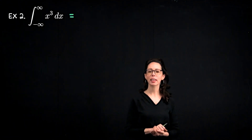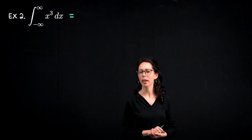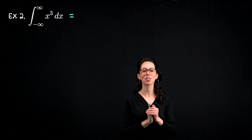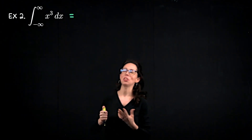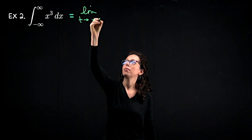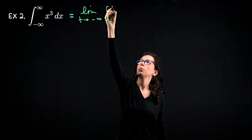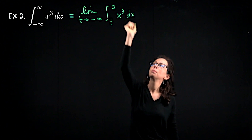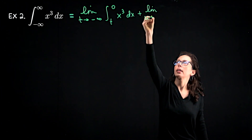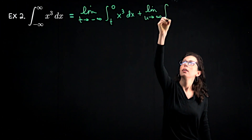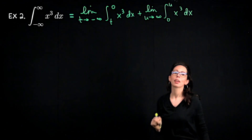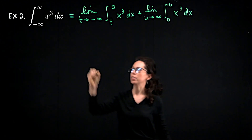Now let's look at another example. We would like to integrate y equals x cubed from negative infinity to infinity. We must break this computation up at some point on the x-axis, and as usual I'm going to pick x equals zero. So this is the limit as t goes to negative infinity of the definite integral from t to zero of x cubed dx, and then we add to that the limit as u goes to infinity of the integral from zero to u of x cubed dx.